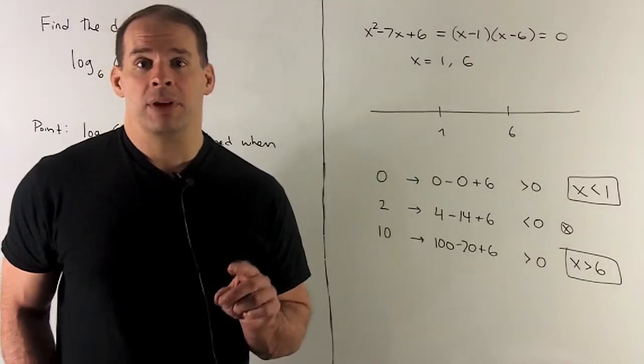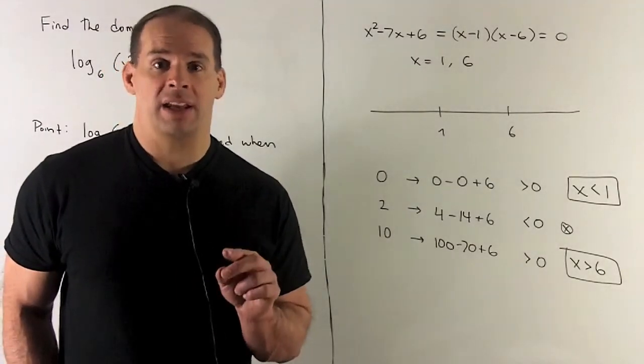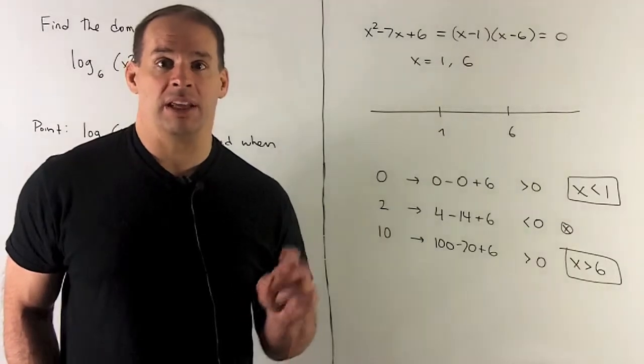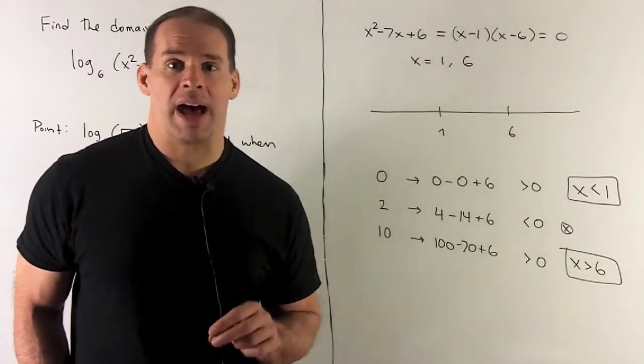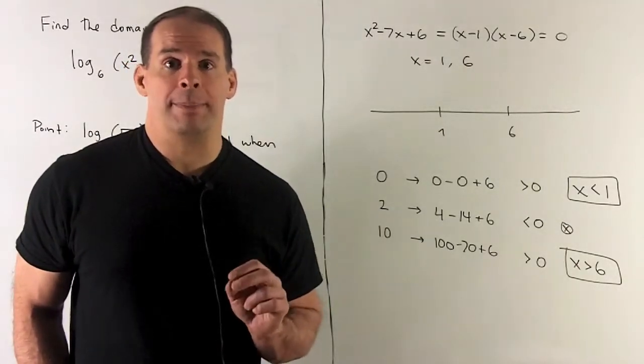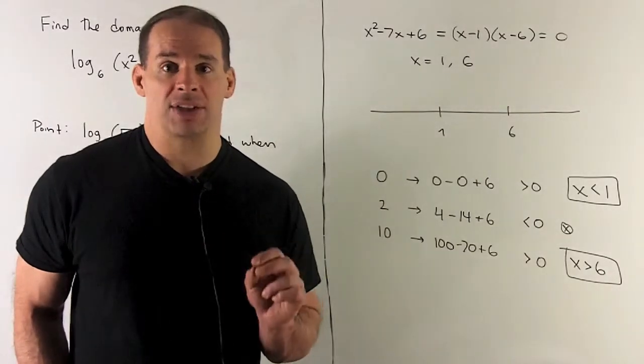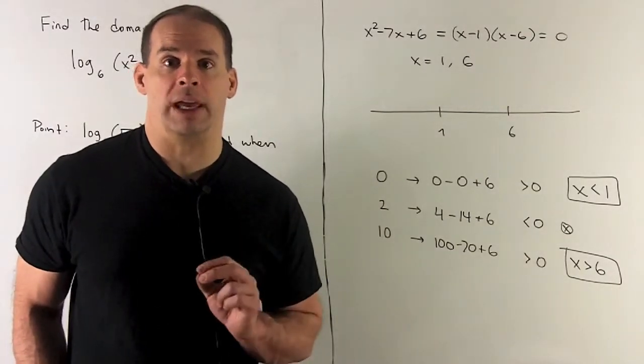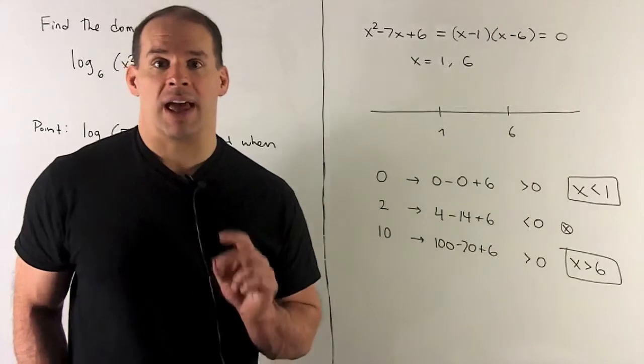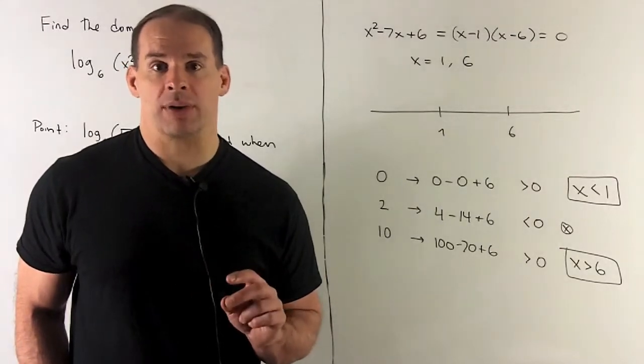And then for our last region, I'm going to put 10 in. I get 100 minus 70 plus 6. That's going to be a positive number, so we'll keep that. So we'll also have x bigger than 6 in our domain. So domain is x less than 1, x bigger than 6.